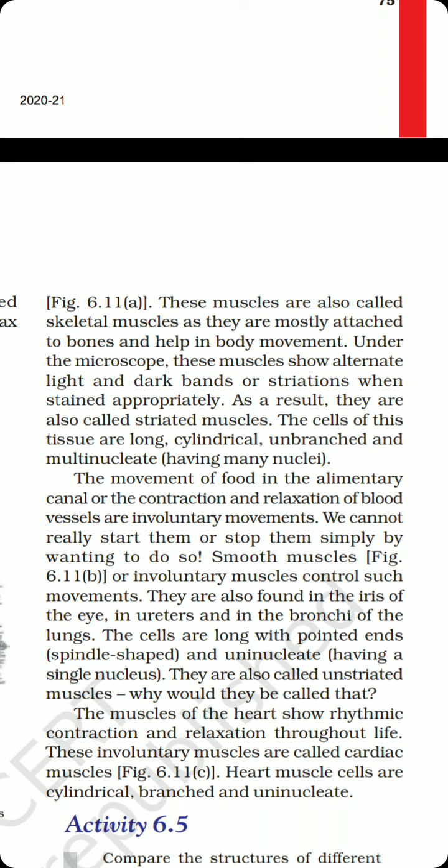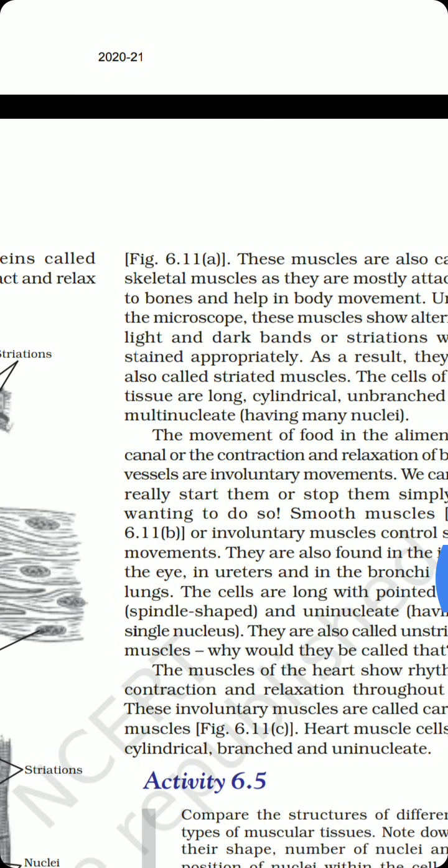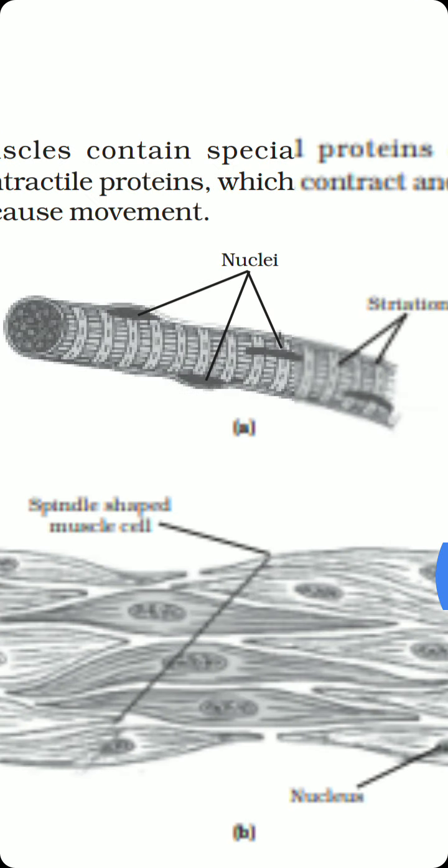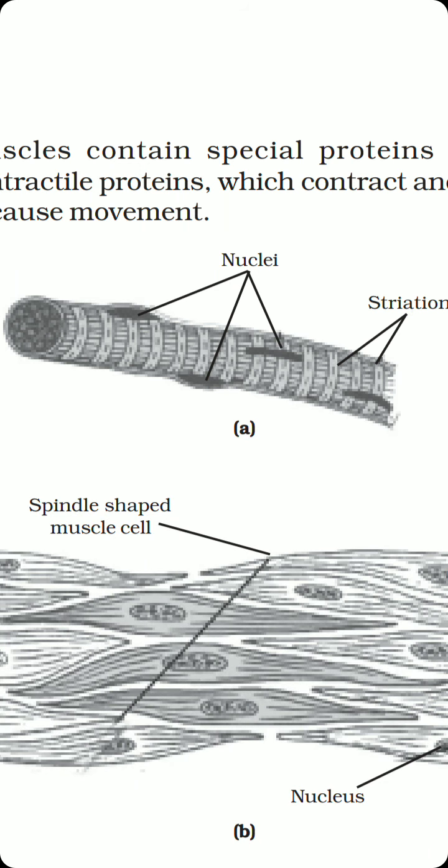The cells of skeletal muscle tissue are long, cylindrical, unbranched, and multi-nucleated. You can see the elongated structure with more than one nucleus and alternate dark and light bands, with no branching. This skeletal muscle connects with the bones of the body and provides smooth movement through contraction and relaxation. Because these muscles are under the control of our will, they are also known as voluntary muscles; because they have alternate dark and light striations, they are also known as striated muscles.